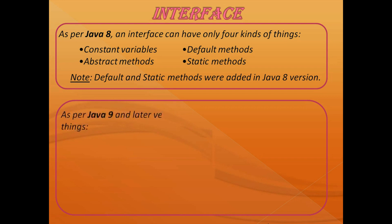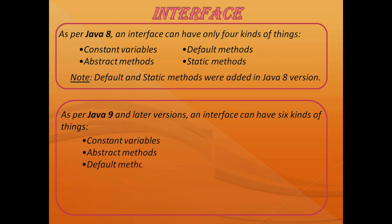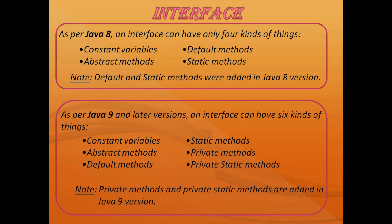As per Java 9 and later versions, an interface can have six kinds of things: constant variables, abstract methods, default methods, static methods, private methods, and private static methods. Private methods and private static methods were added for interfaces in Java 9.